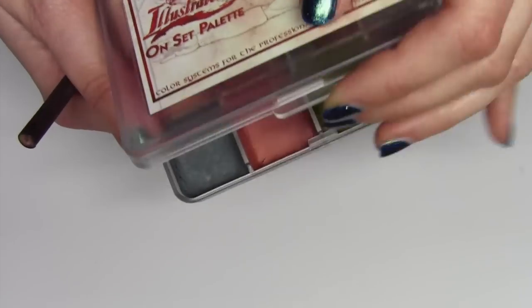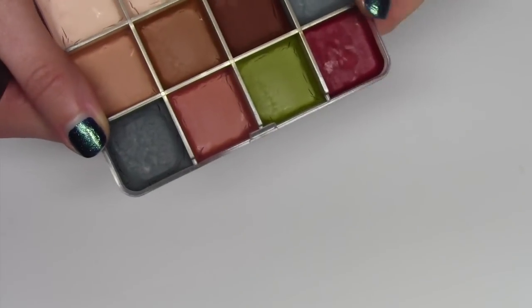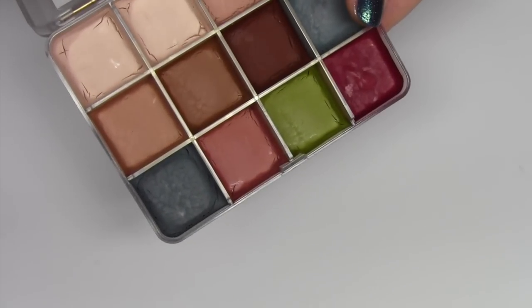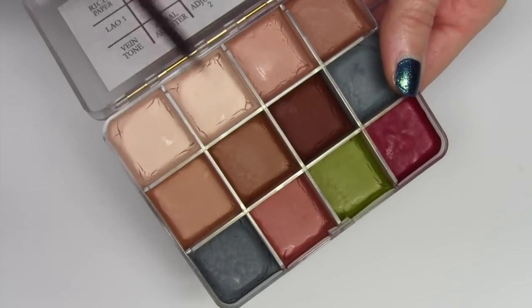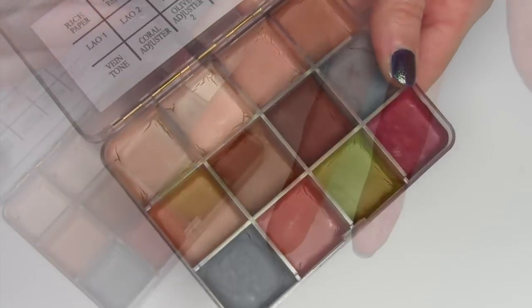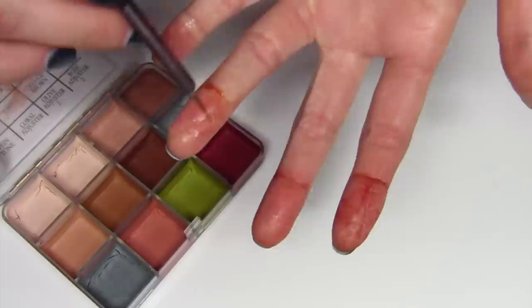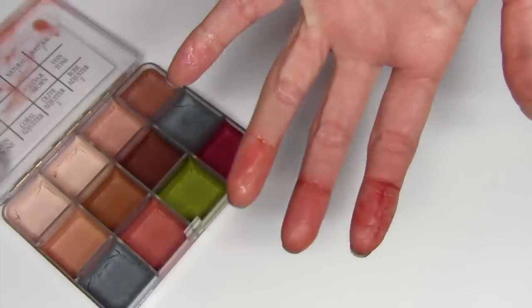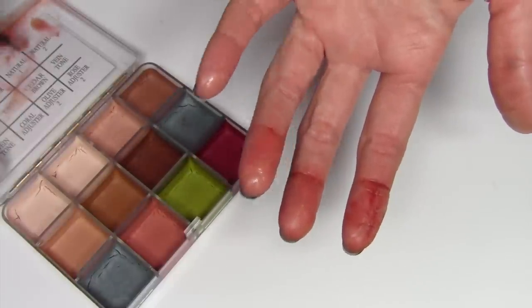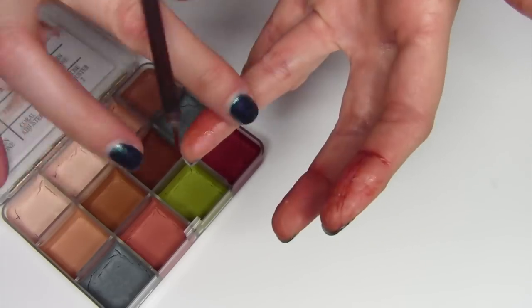Time to color the tips in with the Skin Illustrator On Set Flesh Tone Palette. Activate the palette with alcohol, pick out your skin tone, and fill it in. I mix mine with a dot of red from the On Set FX Palette because my fingertips are always a bit pink reddish kind of color.